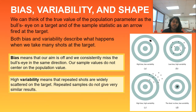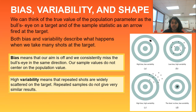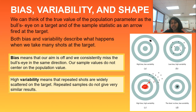High variability means that our repeated shots are widely scattered on the target. Repeated samples do not give similar results. Here we have high bias — we're really far from the target, not quite the population — and high variability. Each of our samples has its own unique value or characteristics, and they're not really centered on each other.